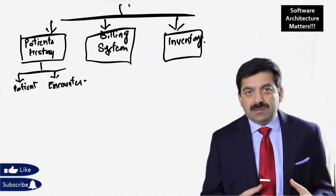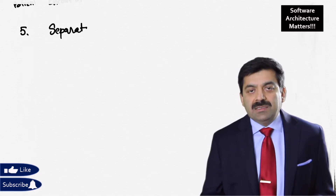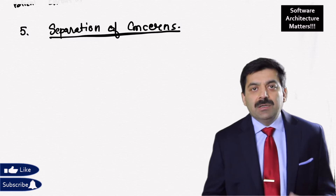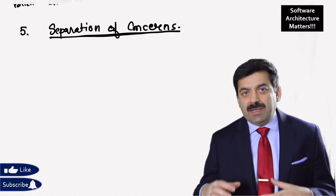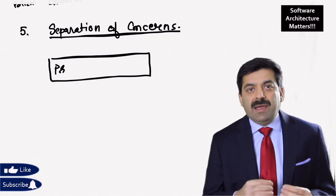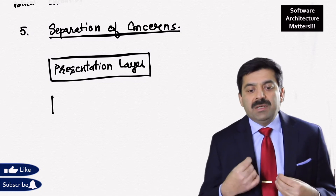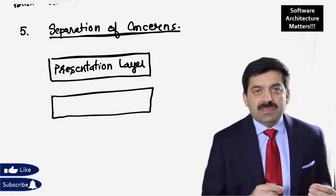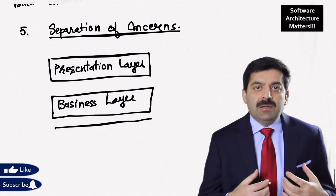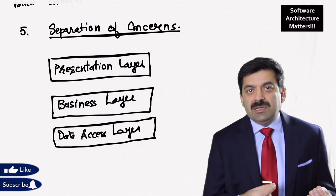The next technique is separation of concerns. In separation of concerns, we make sure that classes with similar responsibilities are grouped together. In a layered architecture, you have a presentation layer, a business layer, and a data access layer. All logic related to presentation goes into the presentation layer; all business logic goes into the business layer; and all data access technology goes into the data access layer. The benefit is that if tomorrow we need to change the data access layer, we can do so without affecting the business layer or the presentation layer.